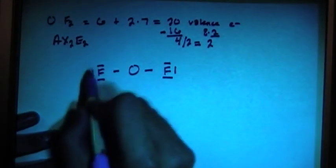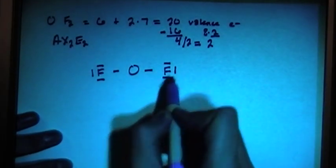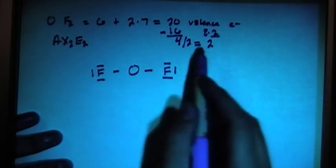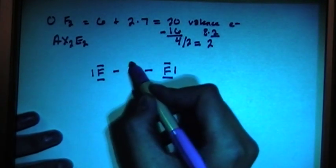This is going to give us 1, 2, 3, 4, 5, 6, 7, 8. So that's 16 electrons so far. We need to have 2 more lone pairs, so we can put one on top, one on bottom. It doesn't really matter where you draw it.